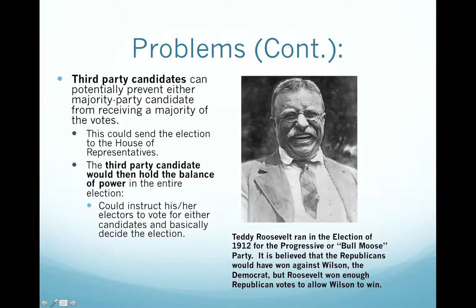To the right, you see Teddy Roosevelt, who ran in the election of 1912 as the Progressive or Bull Moose Party. It is believed that the Republicans would have won against President Wilson, the Democrat. But Roosevelt won enough Republican votes to allow Wilson to win, so he was basically what they call a spoiler.